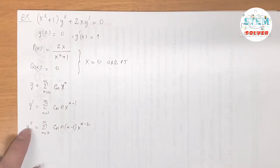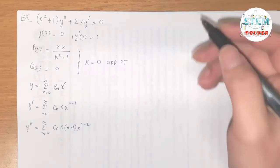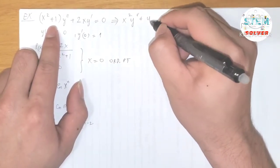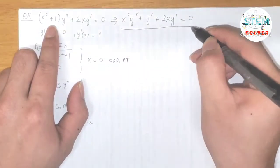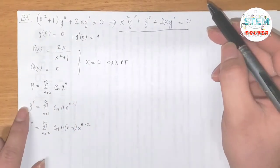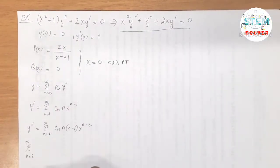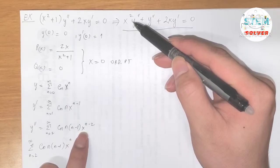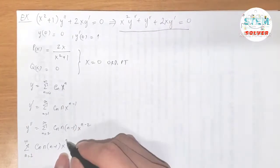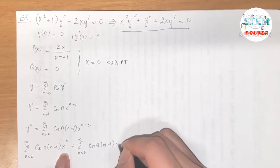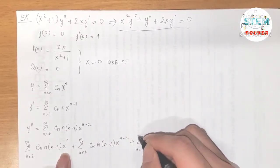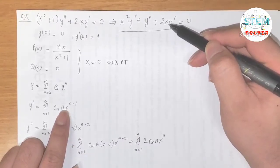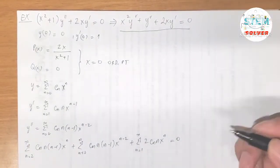Next, I'll plug into the differential equation, but first I'll distribute to make the math easier: x²·y'' + y'' + 2x·y' = 0. Plugging in y' and y'': the first term gives Σ cₙ·n(n−1)·xⁿ from n=2 to ∞ (since x² · x^(n−2) = xⁿ), plus Σ cₙ·n(n−1)·x^(n−2) from n=2 to ∞, plus Σ 2cₙ·n·xⁿ from n=1 to ∞ (since x · x^(n−1) = xⁿ), all equal to zero.